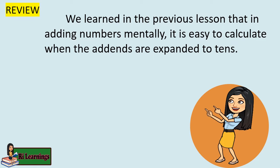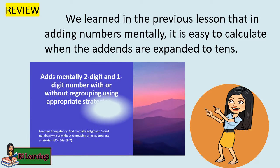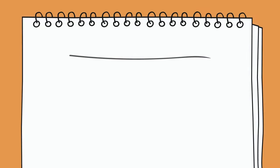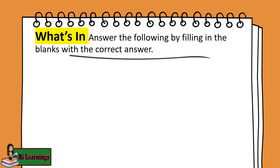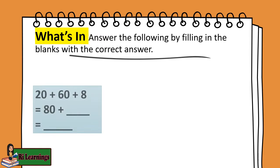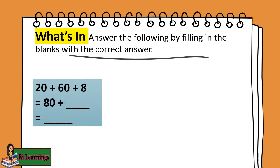We learned in the previous lesson that in adding numbers mentally, it is easy to calculate when the addends are expanded to tens. Let's review the previous lesson. Answer the following by filling in the blanks with the correct answer. 20 plus 60 plus 8 equals 80 plus blank, equals blank.